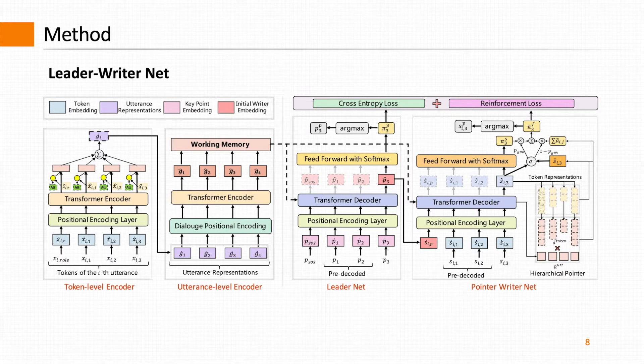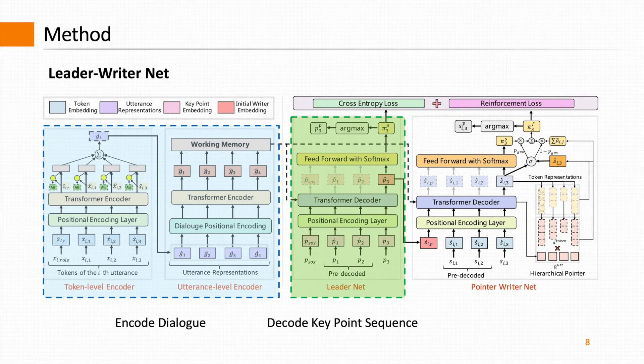It contains a hierarchical encoder to encode the dialogue, a transformer decoder for the key point sequence called the Leader Net, and a Pointer Net decoder for the subsummaries called the Writer Net.